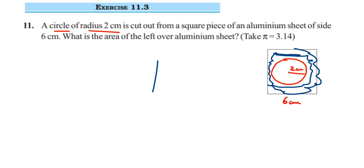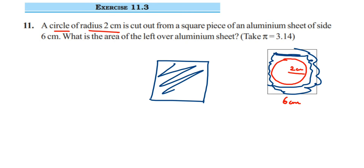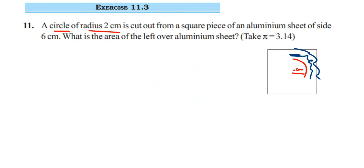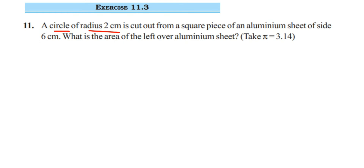Here is our approach: first we are going to find the area of the whole square, and from that area we are going to remove the area of the circle. When you subtract the circle area from the square area, you will get the leftover part. So let's start solving this.